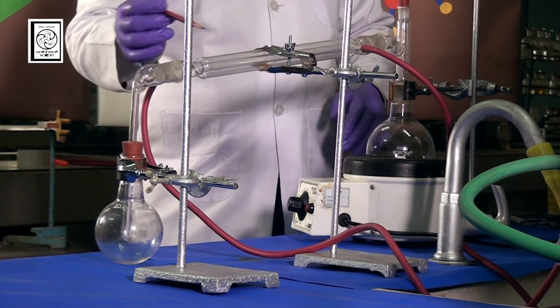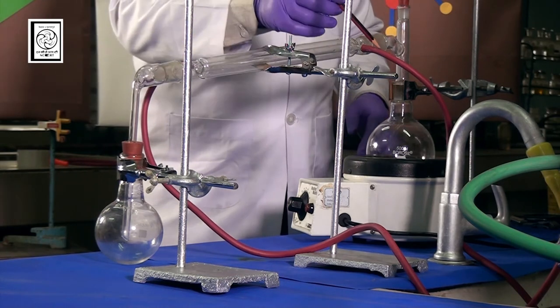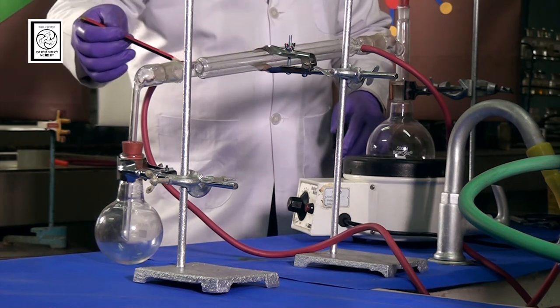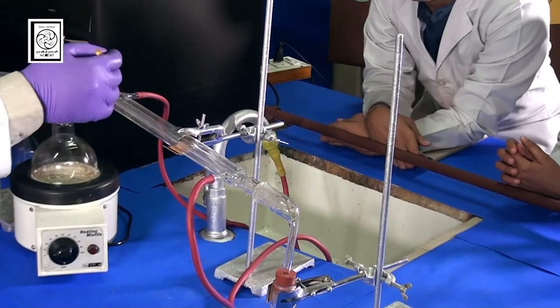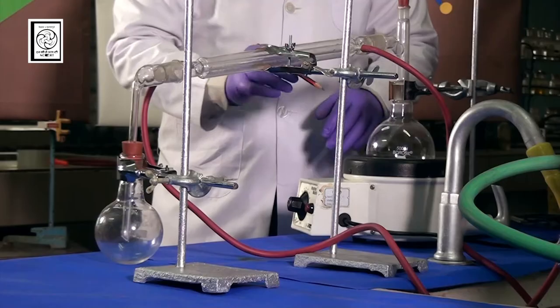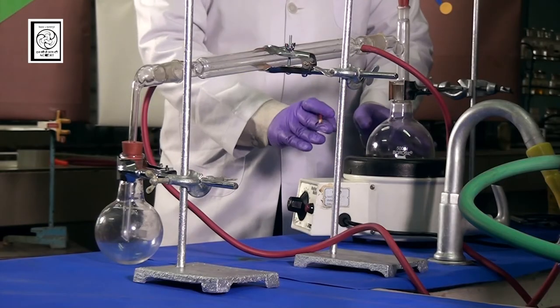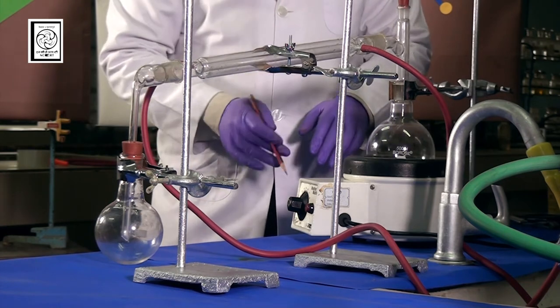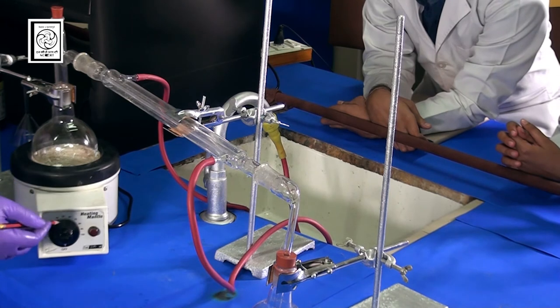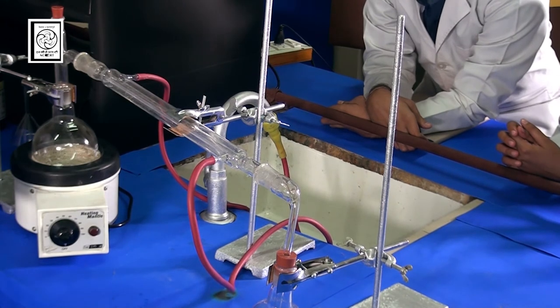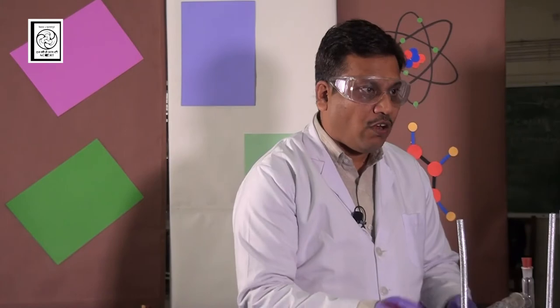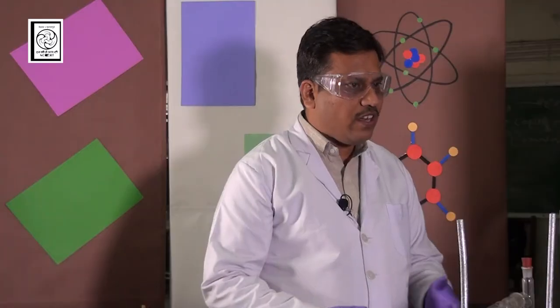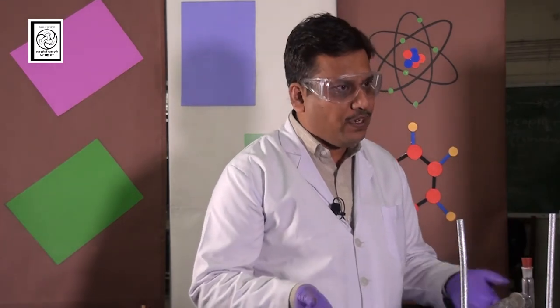In this condenser you are observing two outlets. Rubber tubings are there. This is for inlet water supply and this is for outlet. For the heating purpose we need a heating device. Here we are using an electrical heating device and the device we can use in a controlled manner. The temperature required for distillation purpose we can control by using this. So let us start the process of simple distillation.